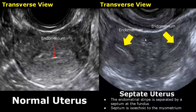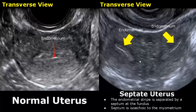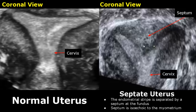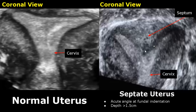In a septate uterus, the endometrial stripe is separated by a septum at the fundus. In transverse view, the septum has divided the endometrial stripe and is isoechoic to the myometrium. In coronal view, we can see a thick isoechoic septum in the middle of the uterine cavity. There will be an acute angle formed at the fundal indentation, and the depth of this indentation will be greater than 1.5 centimeters.